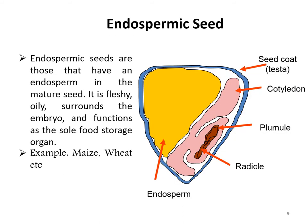There are two types of seeds: endospermic seeds and non-endospermic seeds. Endospermic seeds are those that have an endosperm in the mature seed. It is fleshy and oily, surrounds the embryo, and functions as the sole food storage organ. Inside the seed coat, a thin and papery cotyledon is present. Monocot plants have endospermic seeds, for example maize, wheat, etc.